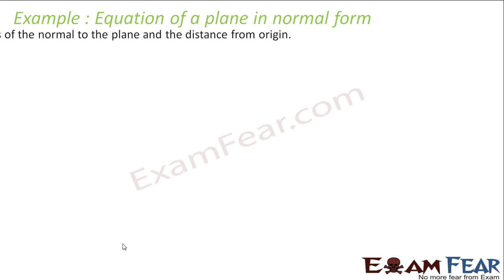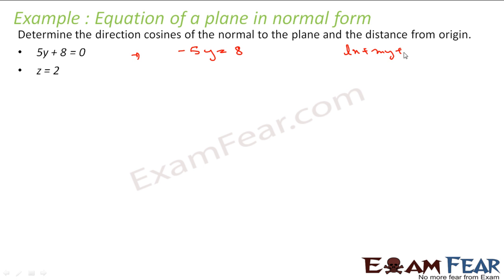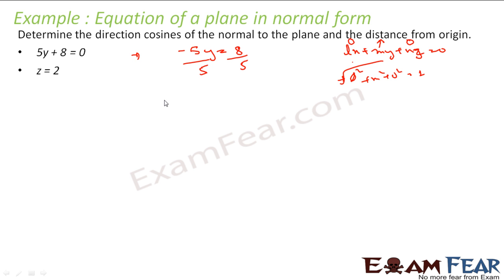Let us take a few more examples. The equations are 5y plus 8 is equal to 0, and z is equal to 2. For 5y plus 8 equals 0, I can write this as minus 5y is equal to 8. Because I need this in the form Lx plus My plus Nz equals d. Here L is 0 and N is also 0, so M must equal 1 since root of 0² plus M² plus 0² equals 1. So I divide everything by 5, and this equation becomes minus y is equal to 8 by 5.